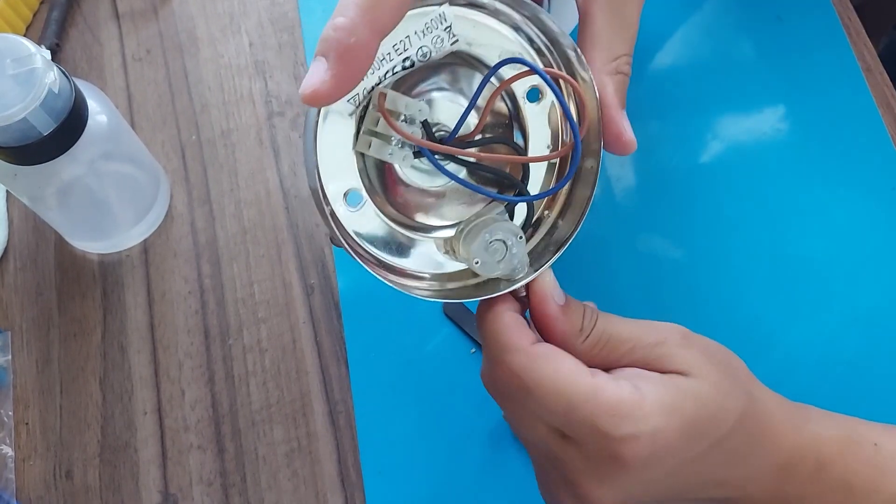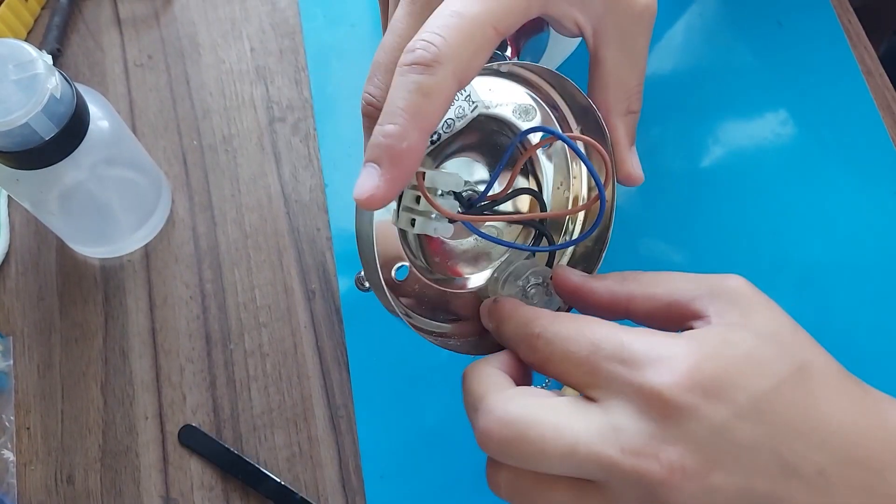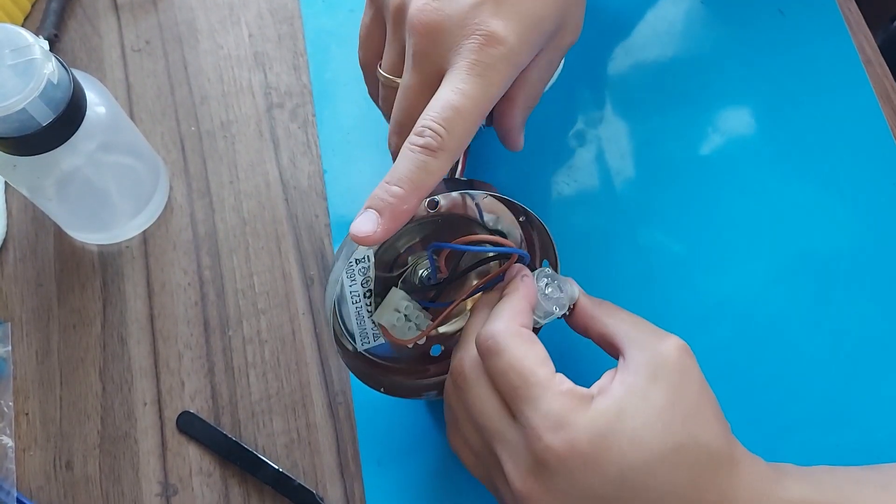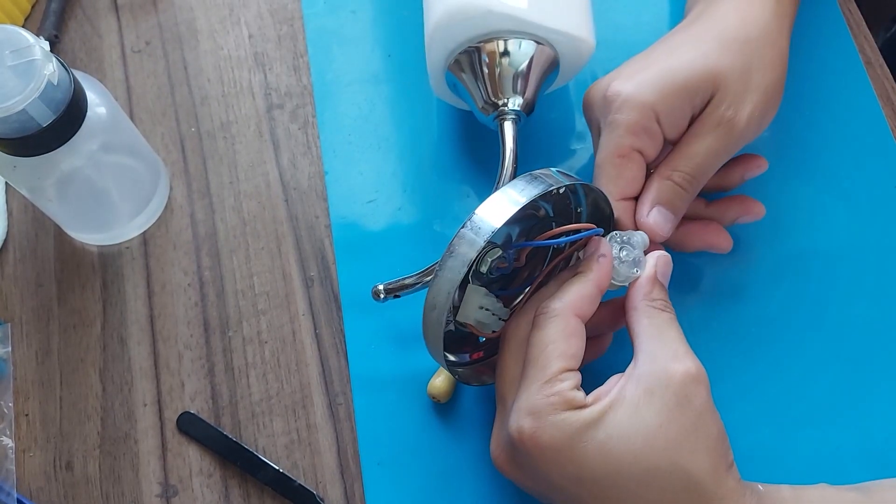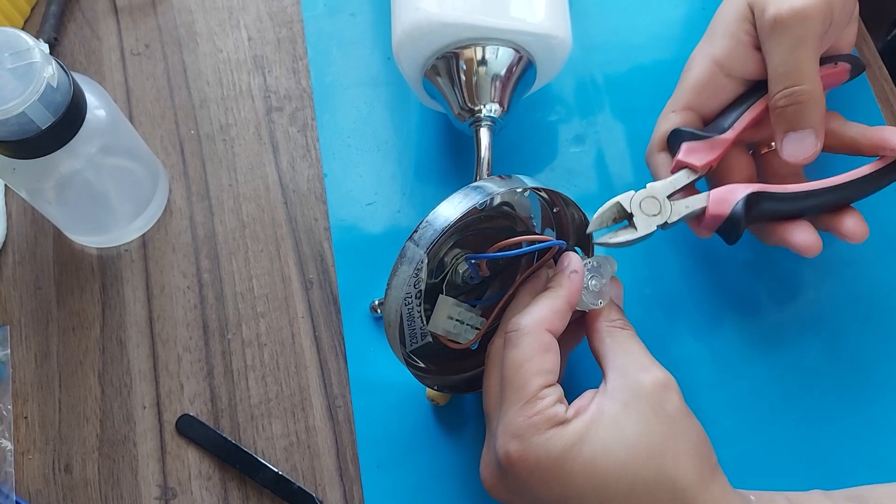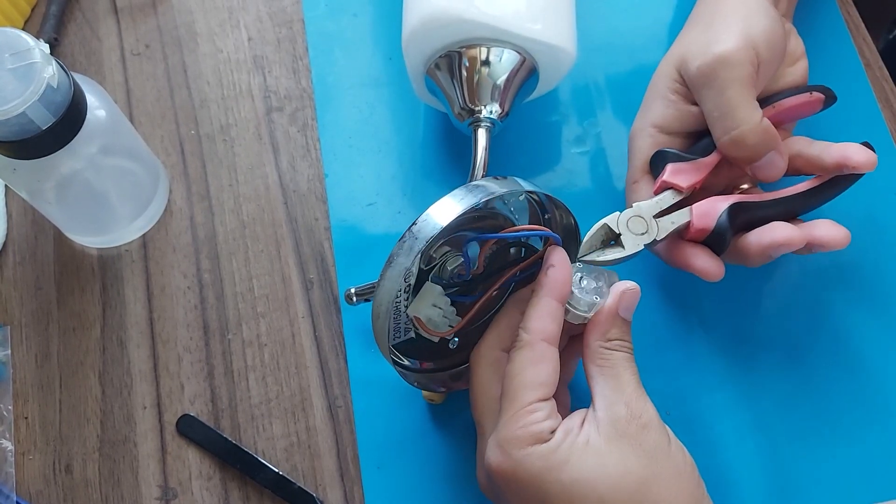Our mechanism is riveted. First we need to get the mechanism out of the lamp. Our switch is riveted and we will have to drill out this device. I'll try to do it with pliers. I will do it behind the scenes so as not to waste your time.